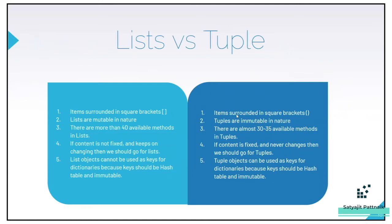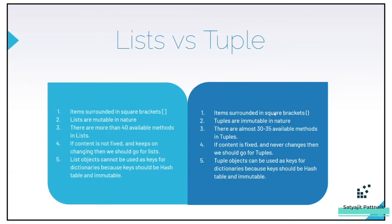Before going there, let's talk about the differences between lists and tuples so you have a better understanding of which data structure to use in which scenario. Items surrounded by square brackets are basically lists. Items surrounded by parentheses — round braces — are basically tuples.